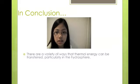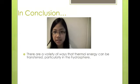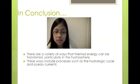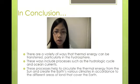In conclusion, there are a variety of ways that thermal energy can be transferred, particularly in the hydrosphere. These ways include processes such as the hydrologic cycle and ocean currents. These processes help to circulate the thermal energy from the Sun and create the Earth's various climates in accordance to the different areas of land that cover the Earth.